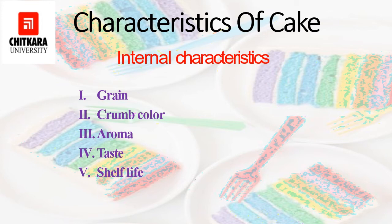The grain is a structure formed by extended gluten strands, including the area they surround. Grains will vary according to the type of cakes. However, uniformity of the size of cells and thin cell walls are desirable qualities. Coarseness, thick cell walls, uneven size of cells, large holes, and tunnels are indicative of poor grain. Grain should not be too open or too close.